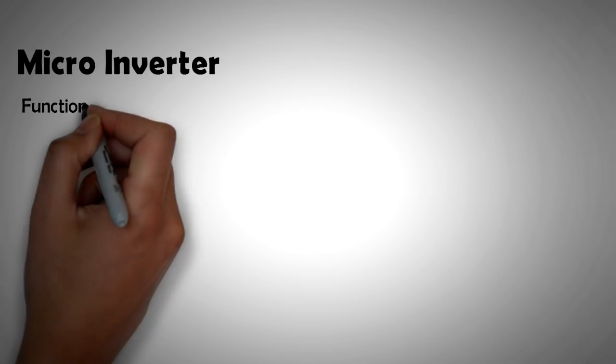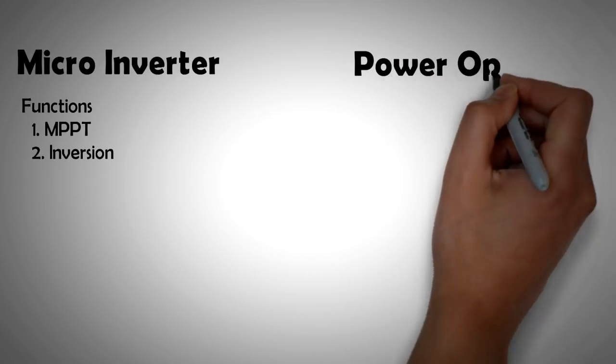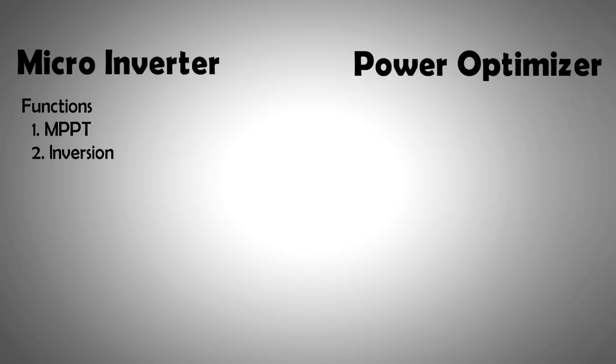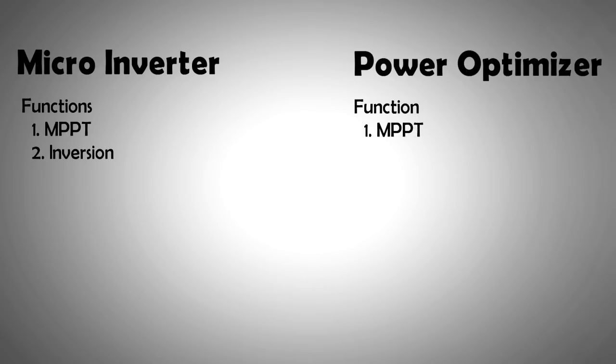If you look at a micro-inverter, it is essentially carrying out two functions. One is the MPPT, or the maximum power point tracking, which is to maximize power from the panel for a given amount of sunshine falling on the panel. And the second is the inversion, which is the converting of DC to AC and feeding it to the grid. A power optimizer based system only performs MPPT at the panel level. It doesn't do the inversion. It then feeds the DC current to a single centralized inverter. This inverter converts the DC into AC and feeds it to the grid.